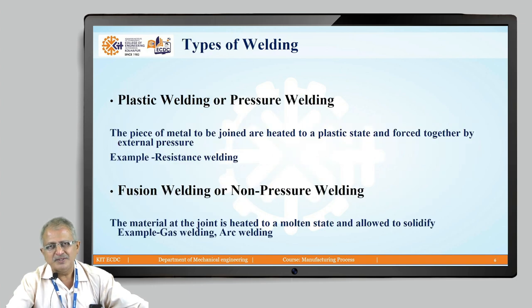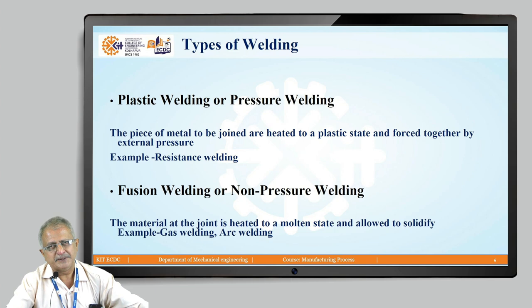So, joining of material with application of pressure and heat, and joining of similar or dissimilar material with application of heat without pressure and using filler material — this covers the standard definition of welding. Based on this, there are two broad classifications of welding types.